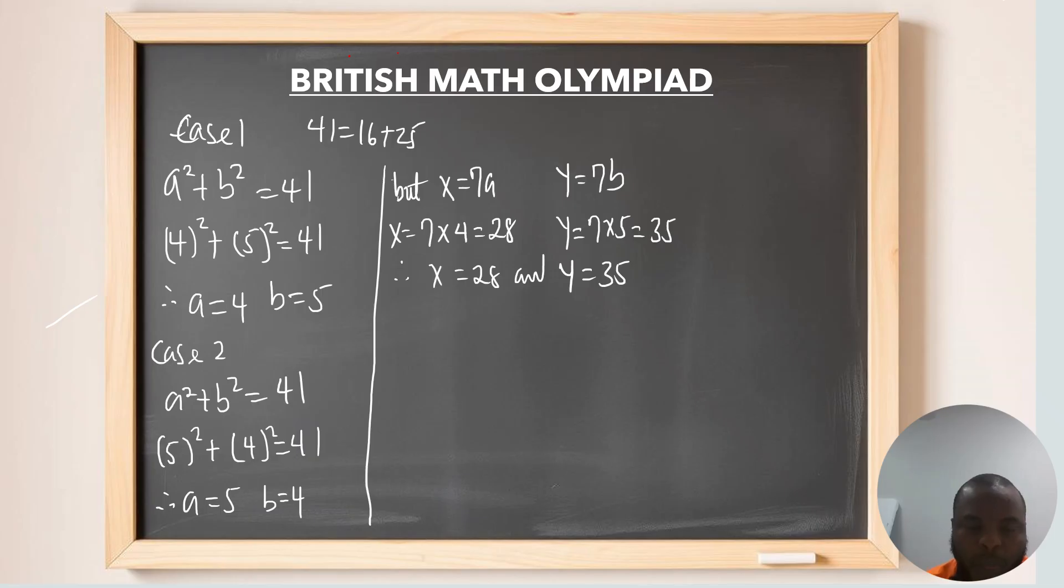In case 2, since a is 5 and our b is 4. So, here x is going to be 7 times 5, which is 35. And our y is going to be 7 times 4, which is 28.